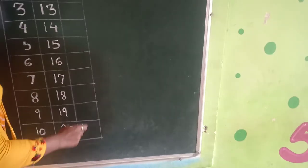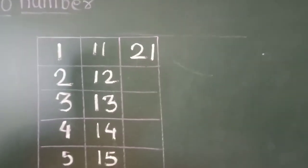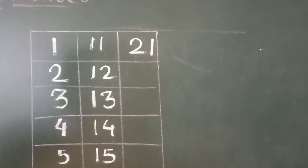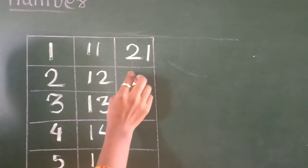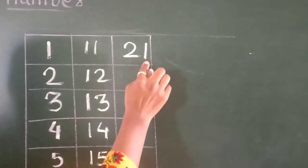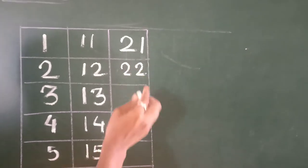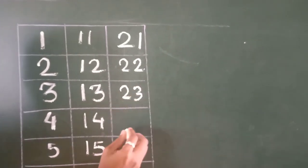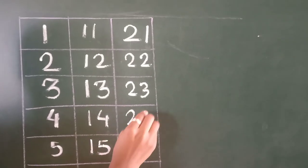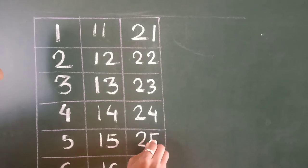After 20, 21 number is there. So 2, 1, 21. All students have to say after me. Okay? See, look on the board and say after me. 2, 1, 21. 2, 2, 22. 2, 3, 23. 2, 4, 24. 2, 5, 25.